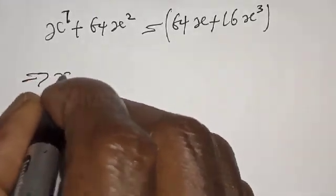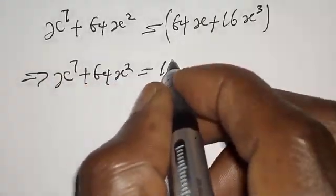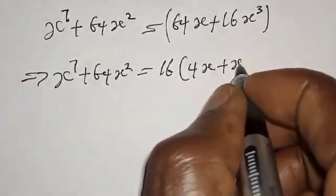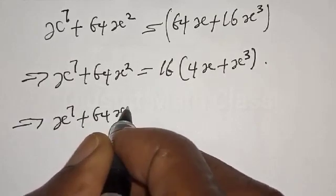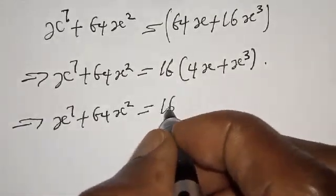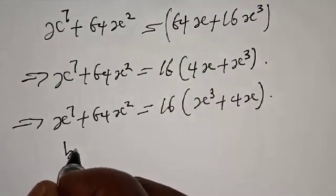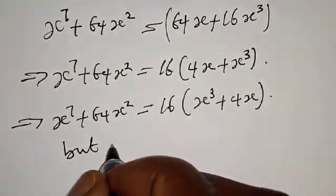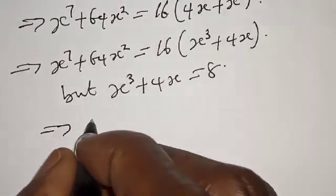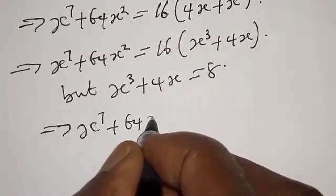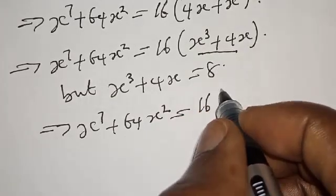This implies that s raised to the power 7 plus 64s squared is equal to — let's factor 16 out — 16 into 4s plus s raised to the power 3. And this can be rewritten as s raised to the power 7 plus 64s squared equal to 16 times s raised to the power 3 plus 4s. But s raised to the power 3 plus 4s is equal to 8.